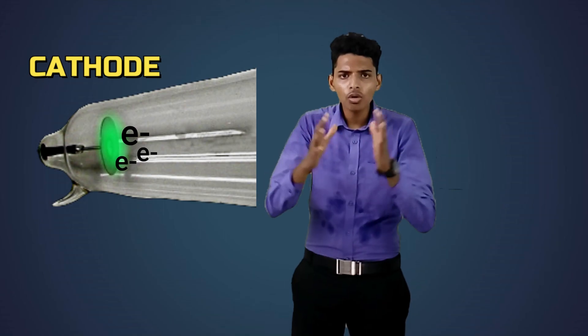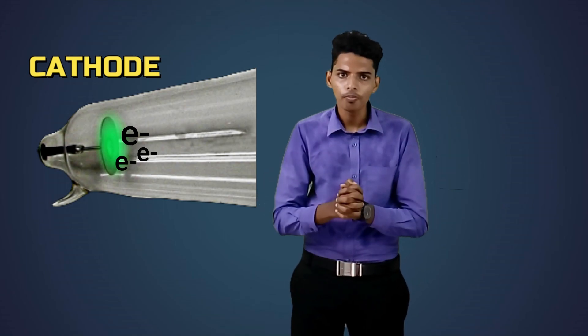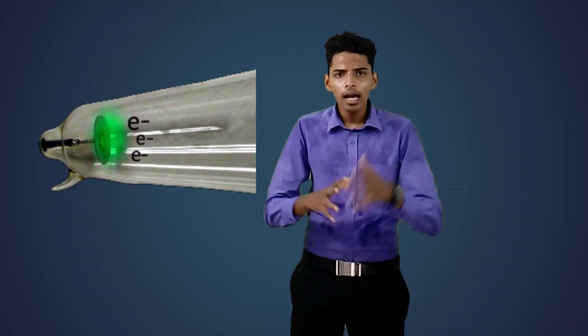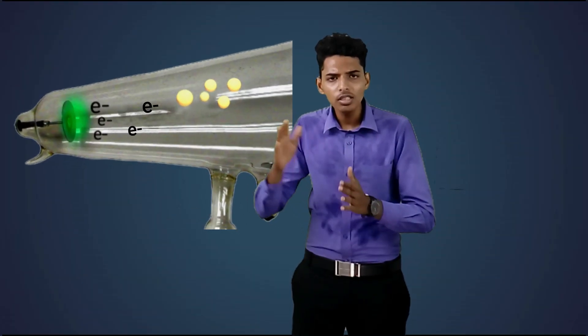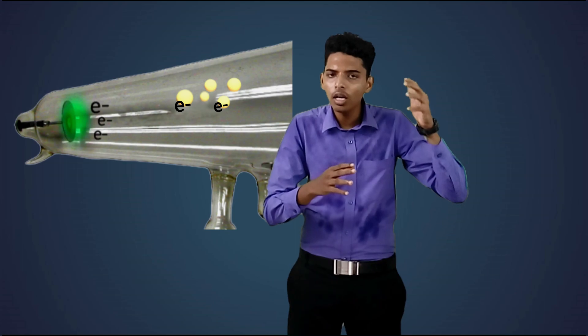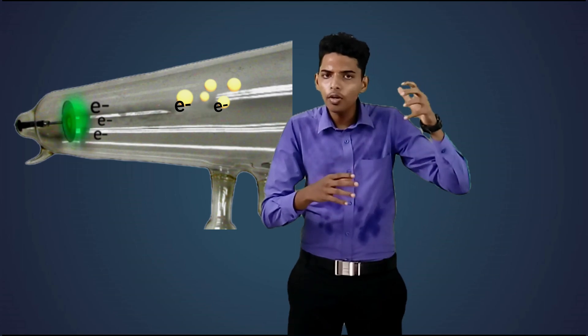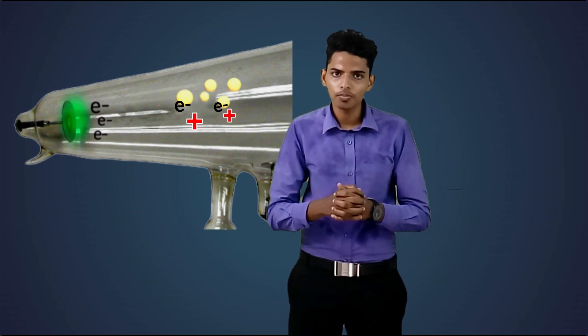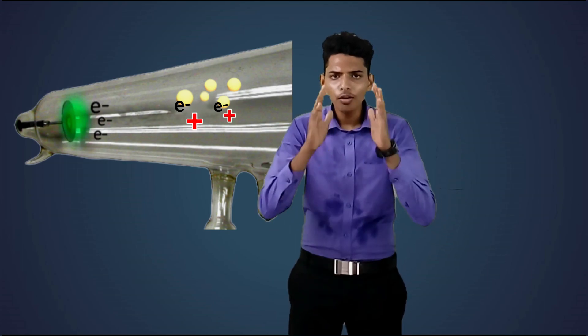Now let's see how X-rays are produced in this Crookes tube. When I give a high kV current to the electrodes of this tube, a small amount of electrons are accelerated at the cathode. As mentioned, some amount of air is filled inside the tube, so these electrons go and ionize the air and produce positively charged ions.